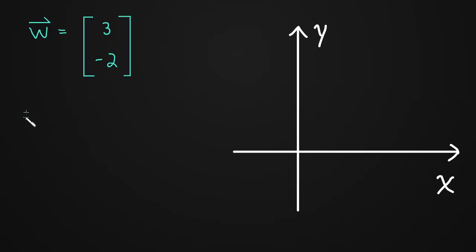Well, then the length of w is just going to be the square root of 3 squared plus negative 2 squared. So we have 9 plus 4, so this is the square root of 13.